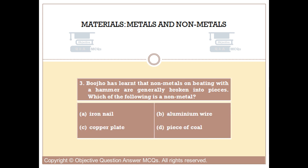Question number three. Which of the following is a non-metal? Option A: Iron nail. Option B: Aluminium wire. Option C: Copper plate. Option D: Piece of coal.